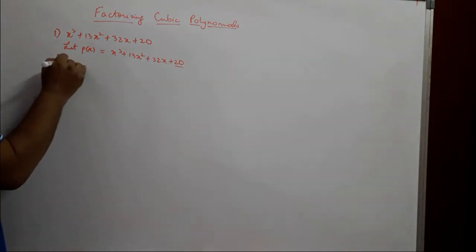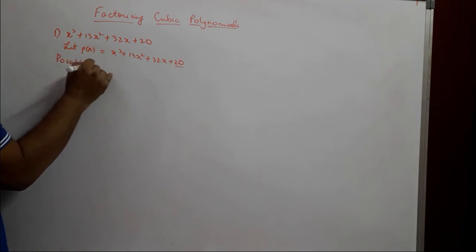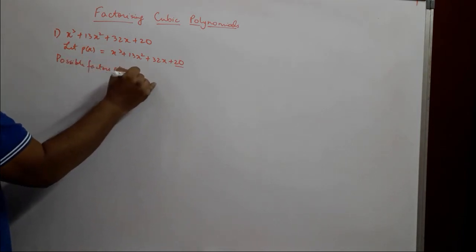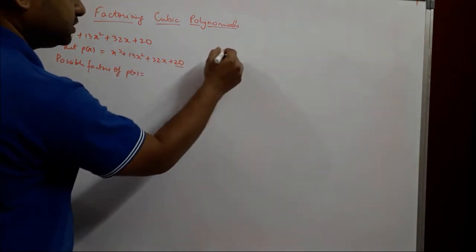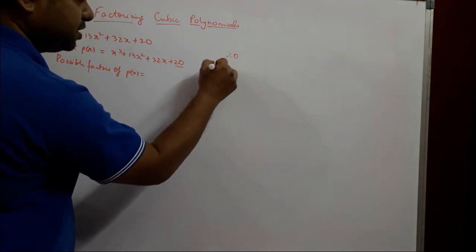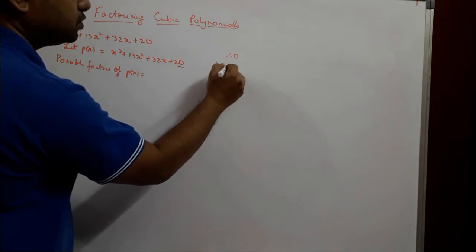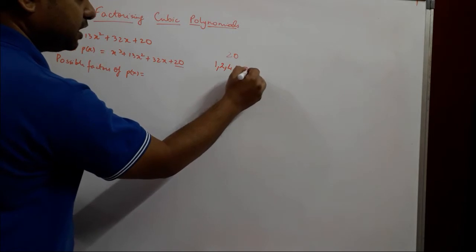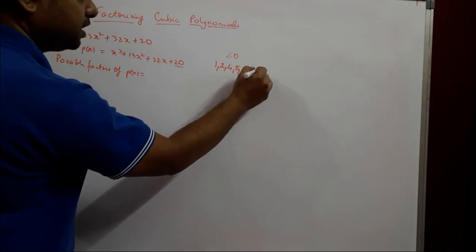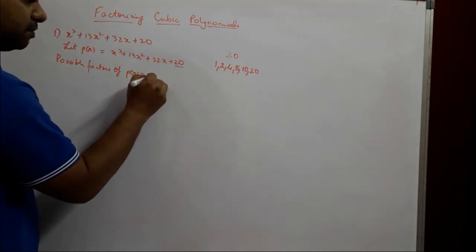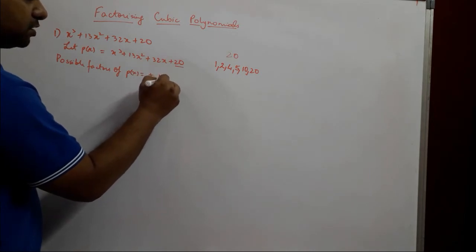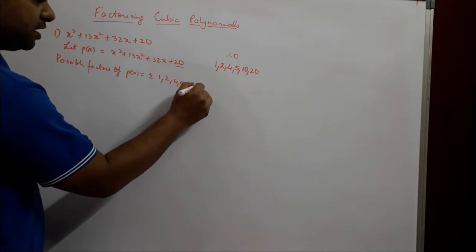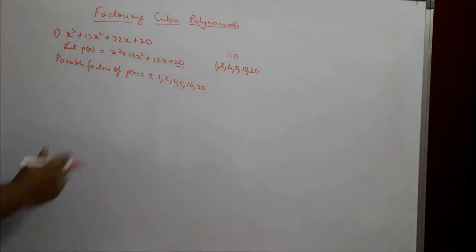What are the factors? The possible factors of p(x) — since the constant is 20 — are: 20 is divisible by 1, 2, 4, 5, 10, and 20. So we list all of them as plus or minus 1, 2, 4, 5, 10, and 20. We will go step by step, starting with checking plus and minus 1 first.